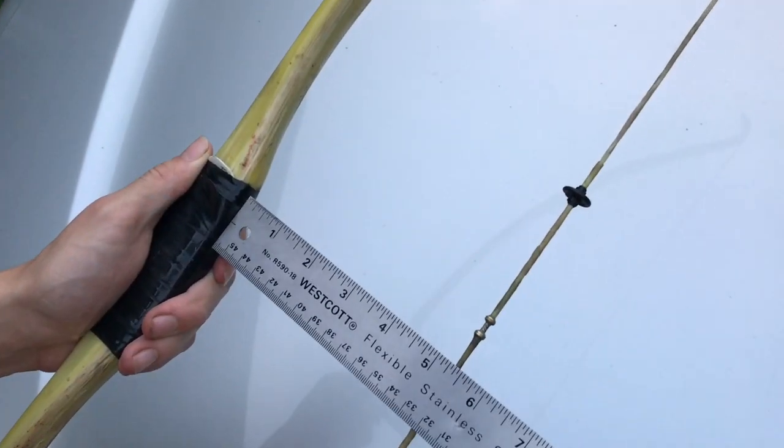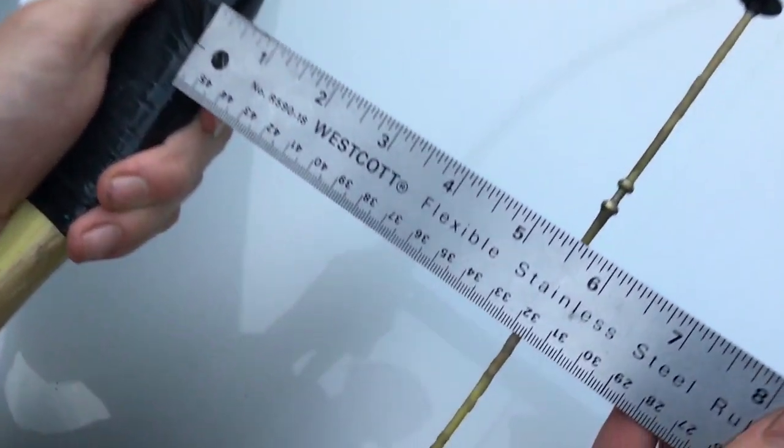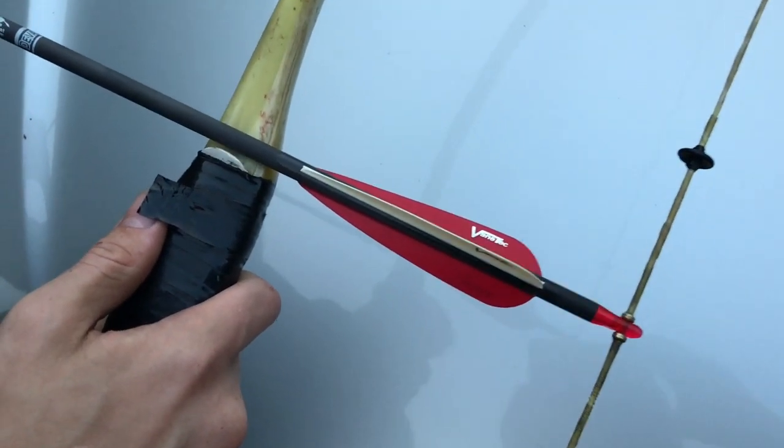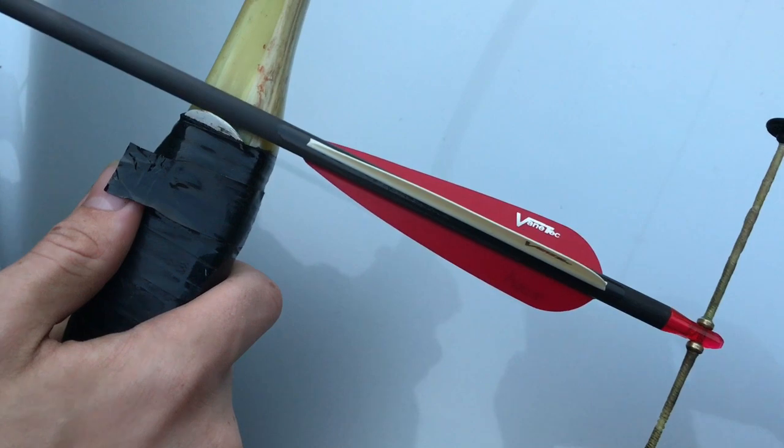Now when we check our measurement, we're at about five and a half inches from the bow to the string. Go ahead and nock an arrow on this new lowered position. I'm kind of liking this a lot better.